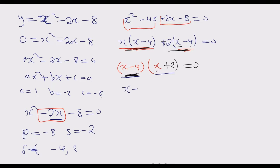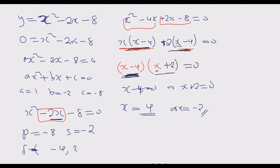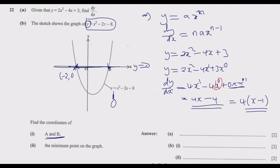So either x minus 4 equals 0 or x plus 2 equals 0, giving x equals 4 or x equals negative 2. Since we are moving along the x-axis the value of y is 0, so the coordinates are: A is negative 2 comma 0, and B is 4 comma 0. That is our answer.